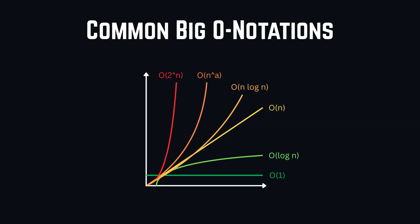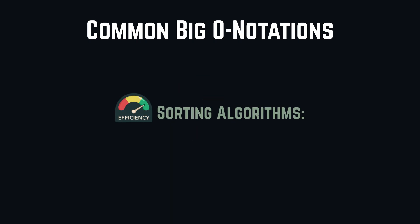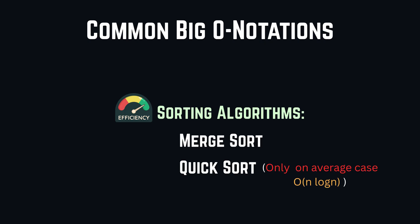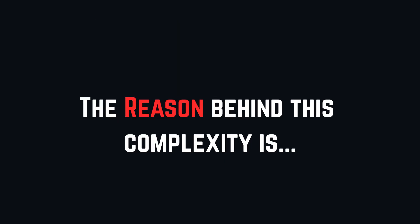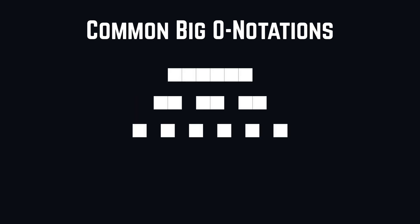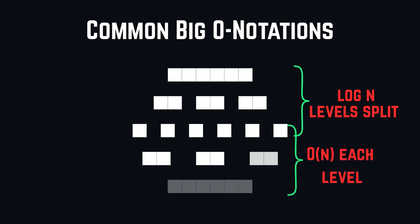O of N log N, log linear time. This commonly appears in efficient sorting algorithms, like merge sort or quick sort, on the average time. The reason behind this complexity is that the input is usually split into smaller parts, the log N divisions, and each part requires O of N operations to be processed.